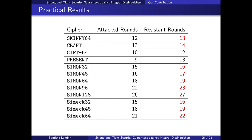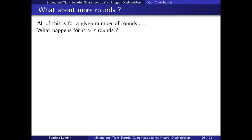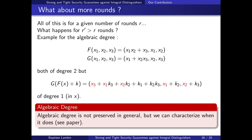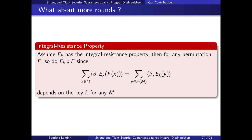The last point is: what about more rounds? We showed a given number of rounds is immune to integral attacks, but what about higher numbers of rounds? We would expect that if r rounds are immune then r' > r rounds are also immune. In practice this is a bit more complicated. If we just consider algebraic degree, with two simple functions f and g both of degree two, composing them — even with a key addition in the middle — can result in a function of degree one. So algebraic degree is not automatically preserved, and we cannot give guarantees automatically. In the paper we characterize when algebraic degree is preserved.